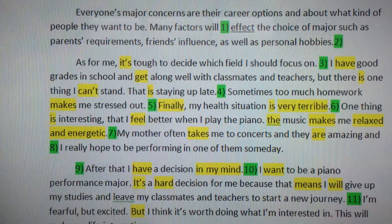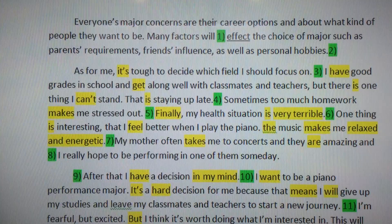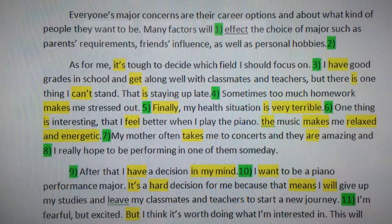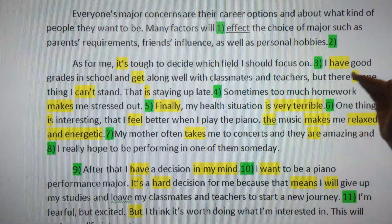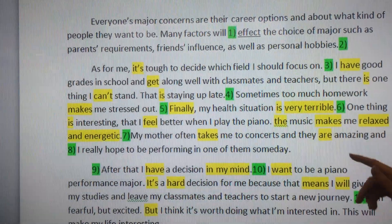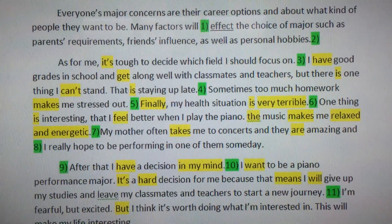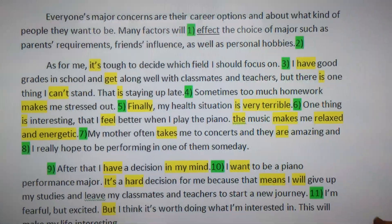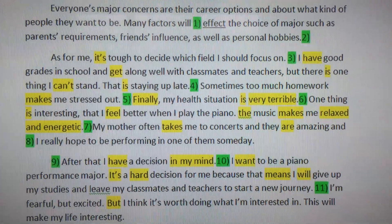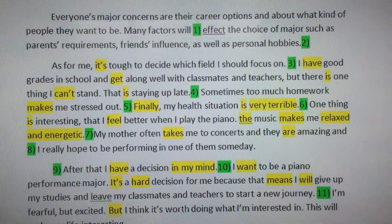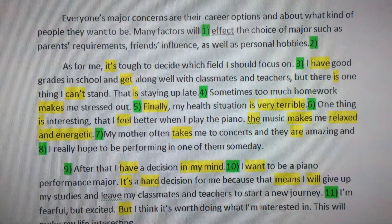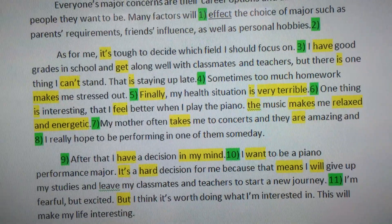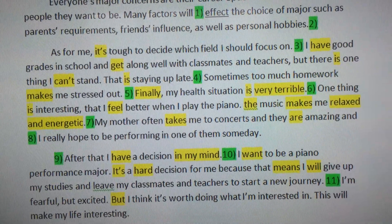Paragraph two: 'As for me, it's tough to decide which field I should focus on. I have good grades in school and get along well with classmates and teachers, but there is one thing I can't stand.' Just from reading those two sentences, the tense is not correct. These statements may be true today, but this is all information pertaining to an event in the past. So everything in present tense will be switched to past tense in the corrected copy. 'That is staying up late. Sometimes too much homework makes me stressed out. Finally, my health situation is very terrible. One thing is interesting: I feel better when I play the piano. The music makes me relaxed and energetic. My mother often takes me to concerts and they are amazing, and I really hope to be performing in one of them someday.' We need a little more explanation in certain parts of this paragraph.